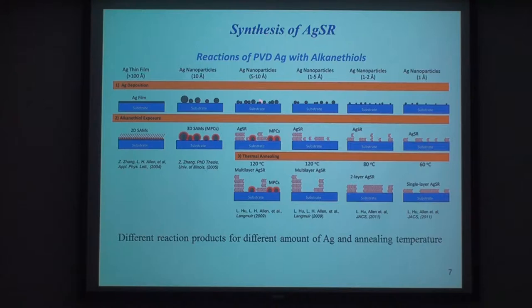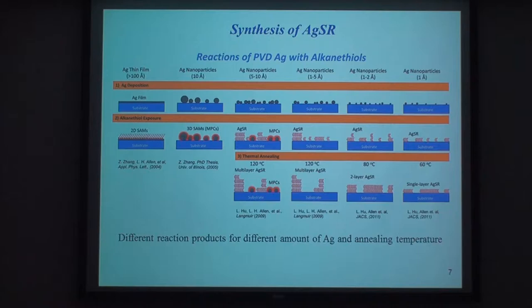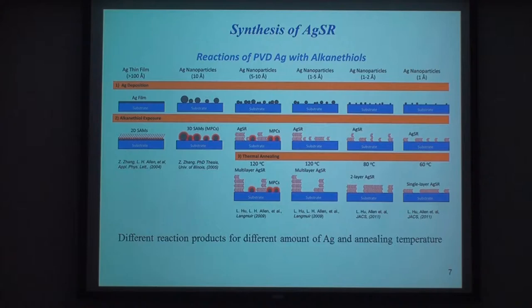Furthermore, if we reduce the amount of silver all the way to 1 angstrom and also change the annealing temperature, we can control how many layers of material we grow. We have achieved a synthesis of purely single-layer silver alkane thiolate on substrate, and we can also make purely two-layer silver alkane thiolate on substrate. This opens up the possibility of studying layer-by-layer thermodynamics: for single-layer material we are purely dealing with surfaces, no interfaces, while for two-layer AgSR there is an interface between the two layers. So we can deconvolute the contribution of surface energy versus interface energy in the study of melting points.